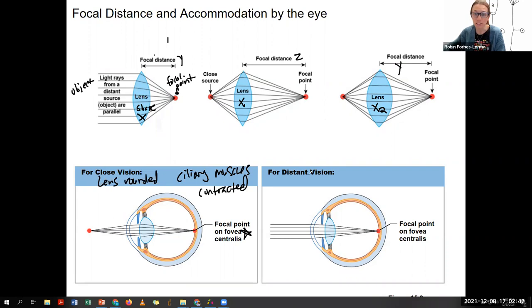For more distant vision, we've got our lens flatter, and our ciliary muscles are relaxed. Where is the focal point? Still on the fovea. That's what we want. Of course, there's a spectrum in between this. So you can see and focus on images at far and near distances and everything in between.